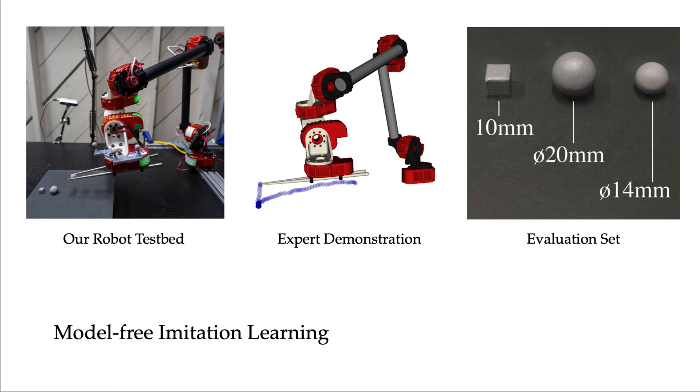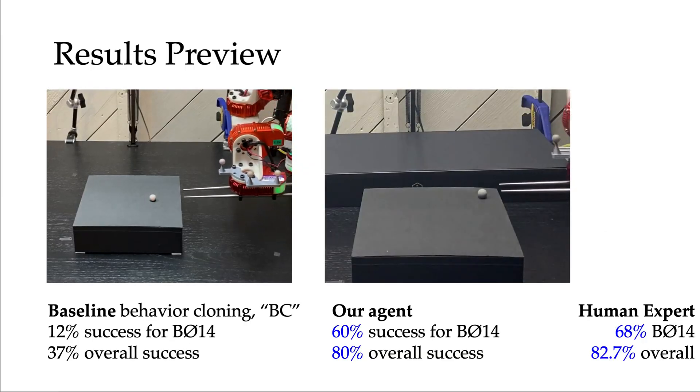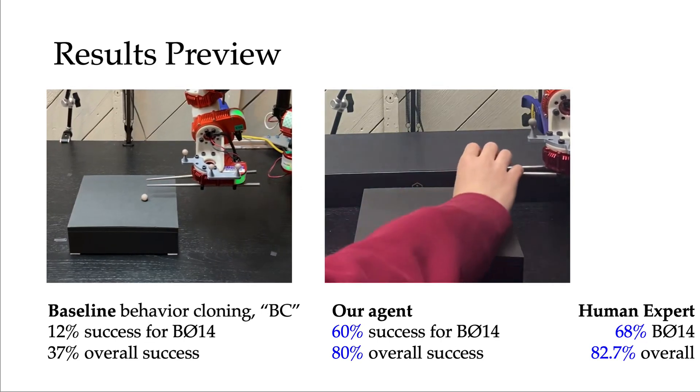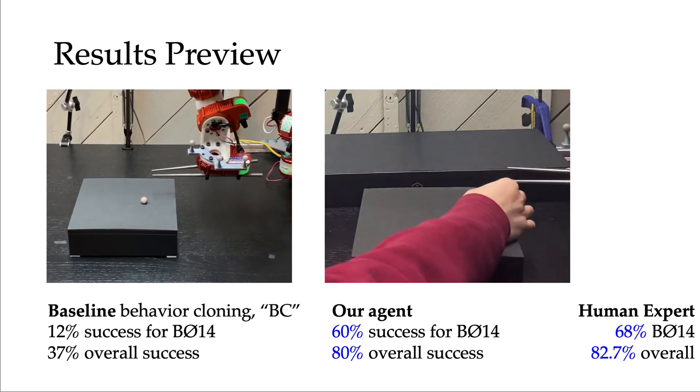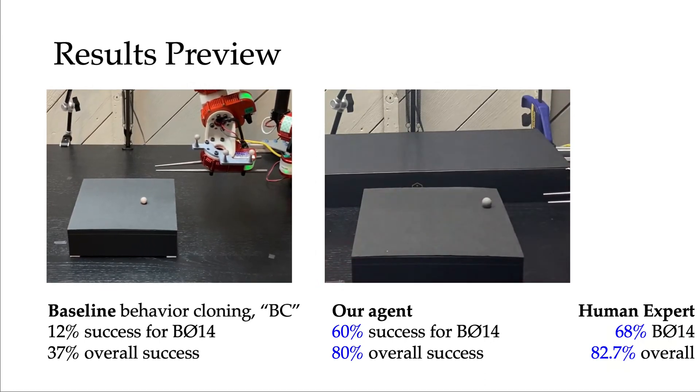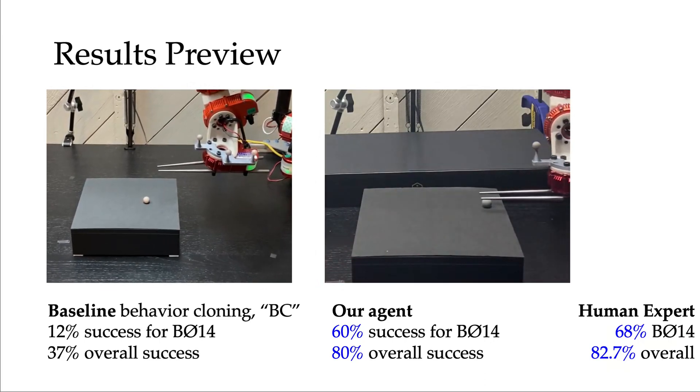So we'd like to use model-free imitation learning to solve the task. We will evaluate our proposal on picking up three different items. Remember that our model has an error of 1 to 6 millimeters, so the distance between the estimated tip position and the actual tip position can be equal to the radius of this small ball that we want to pick up in our experiments. On the left, we show our baseline, a naive behavior cloning agent, or BC. It struggles to pick up the small ball. On the right-hand side is our proposed agent, which achieved comparable performance to human experts.